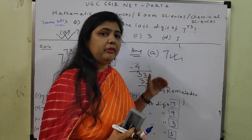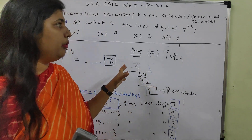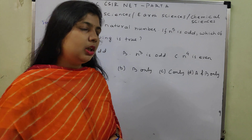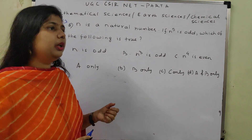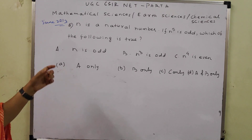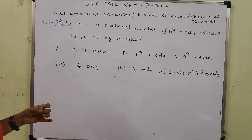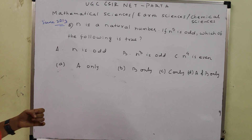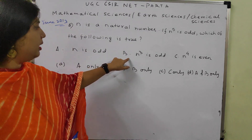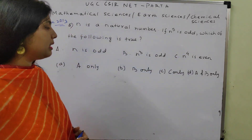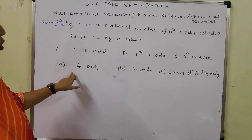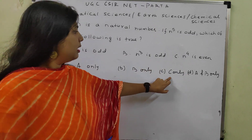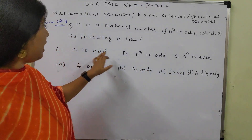The next question is again from June 2013. If N is a natural number and N^5 is odd, which of the following is true? Option A: N is odd. Option B: N^3 is odd. Option C: N^4 is odd. Option D: A and B only.